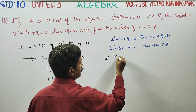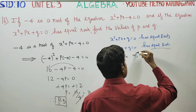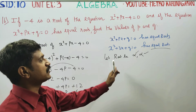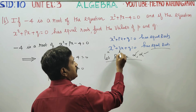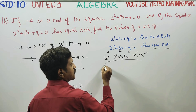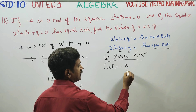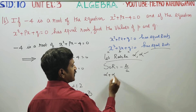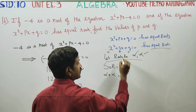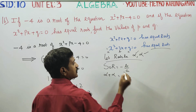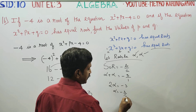For equal roots, let both roots be alpha and alpha. Here a equals 1, b equals 3, c equals q. Sum of the roots: alpha plus alpha equals minus b over a. So 2 alpha equals minus 3 over 1, giving alpha equals minus 3 by 2.